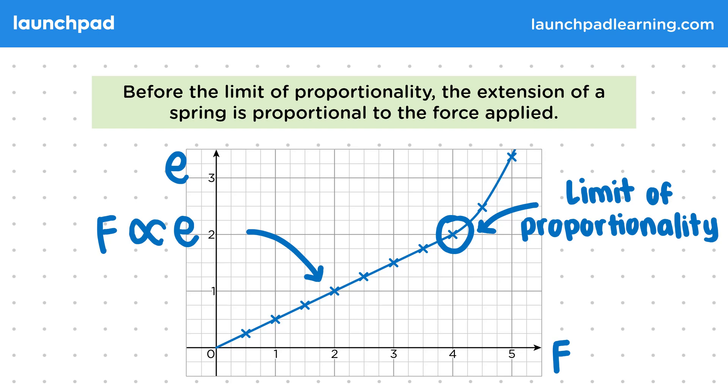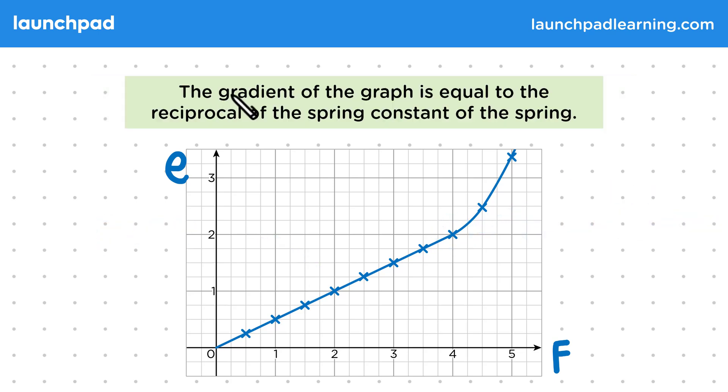So how can we use this graph to figure out the spring constant? Well, the gradient of the graph is equal to the reciprocal of the spring constant of the spring.